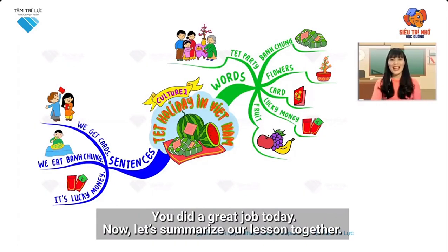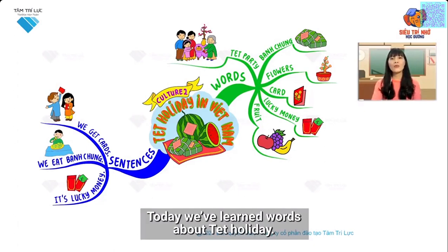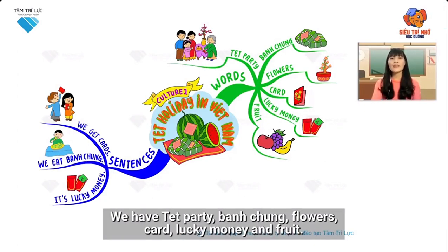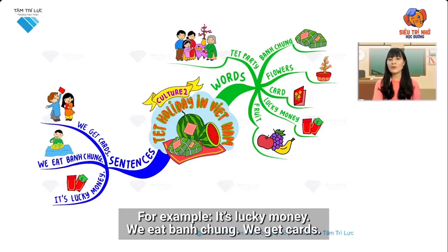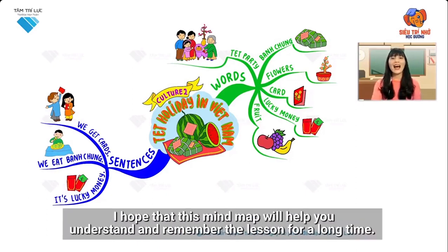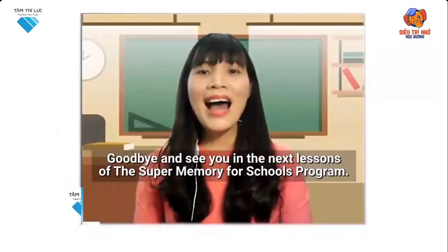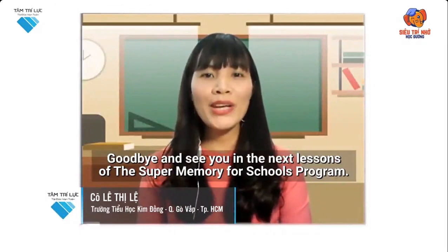You did a great job today! Now let's summarise our lesson together. Today we've learned words about Tet holiday: Tet party, banh chung, flowers, card, lucky money, and fruit. We also know how to make sentences with these words — for example: 'It's lucky money,' 'We eat banh chung,' 'We get cards.' I hope this mind map will help you understand and remember the lesson for a long time. Goodbye and see you in the next Super Memory for Schools programme!